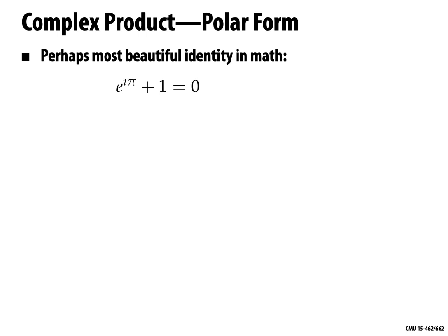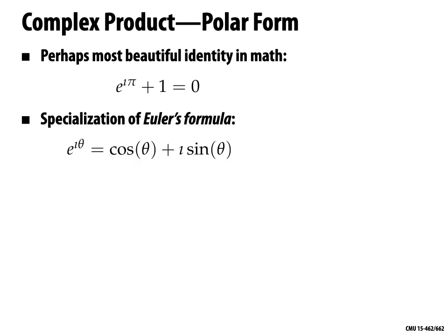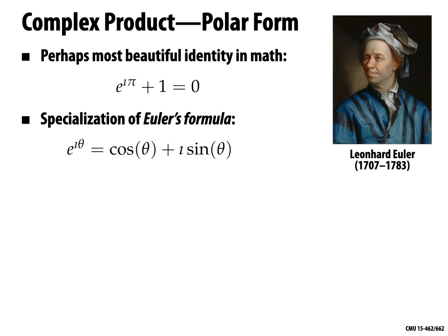Actually, this formula is a specialization of what I'd say is a slightly more useful formula: Euler's formula, named after this funny-looking guy Euler — by the way, it's pronounced 'Oiler', not 'Euler'. Euler's formula says e^(iθ) = cos θ + i sin θ. The way we're going to think about e^(iθ) is simply as a function that takes θ to a point on the unit circle. In fact, e^(iθ) is just our function S(θ) from before.